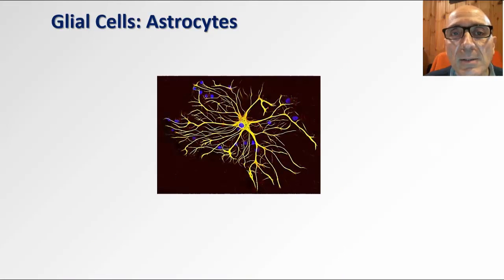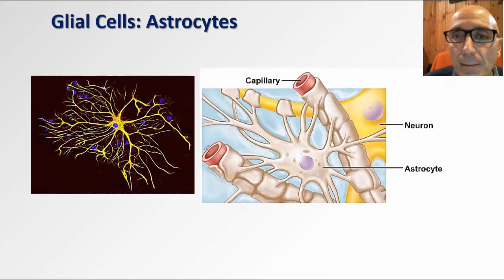Glial cells perform important functions for the proper functioning of neurons. An example of such cells are the astrocytes, shown here, found in the central nervous system. These cells contribute to the formation of the blood-brain barrier, which protects the central nervous system from toxic chemicals circulating in the blood by acting as a physical barrier to their diffusion from the blood to nervous tissue. Astrocytes perform their function by wrapping their cellular extensions around small blood vessels in the central nervous system.